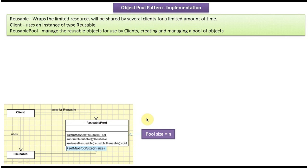You can see here pool size equals N — we can define the pool size. If pool size is defined as five, then only five reusable objects can be in the reusable pool. Now we will see how it works.